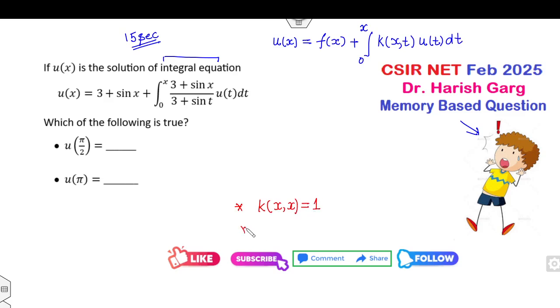Check whether these two properties are satisfied or not: k(x,x) equals 1, and k(x,t) multiply k(t,x) equals 1. If these two properties are satisfied, then you can apply my shortcut tricks.